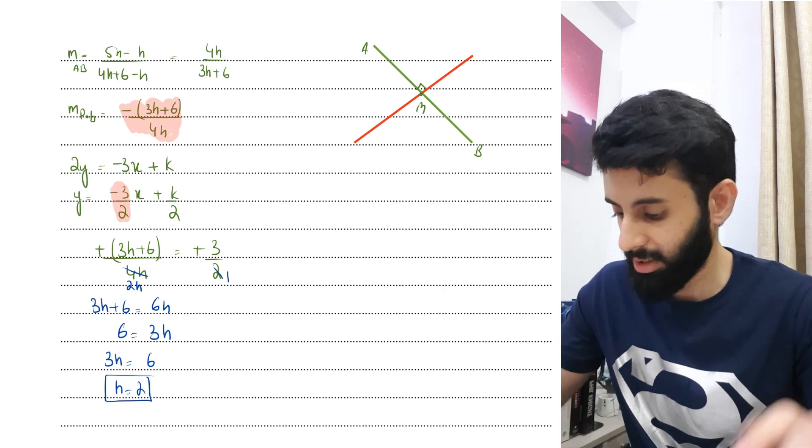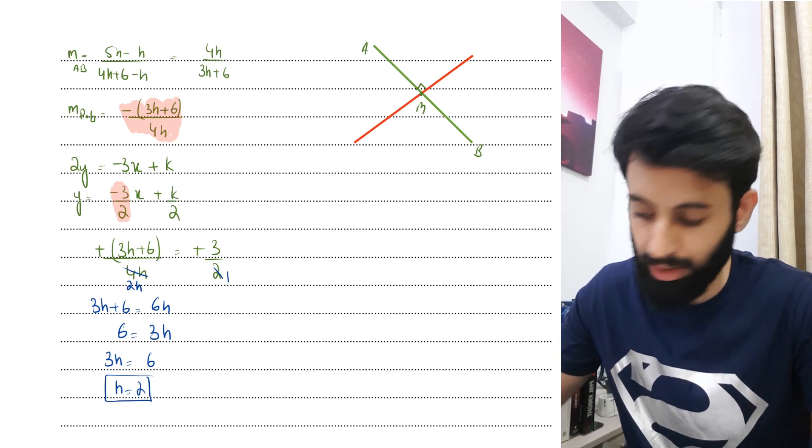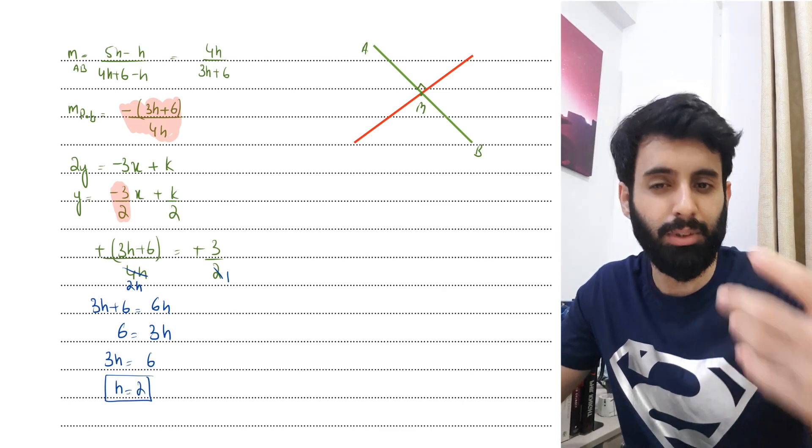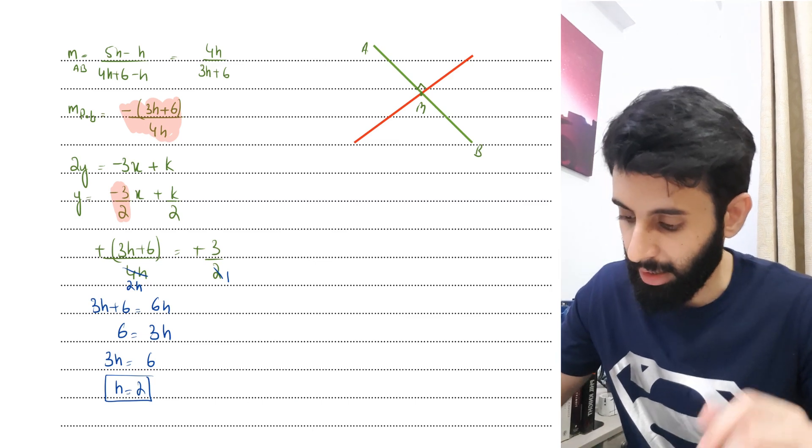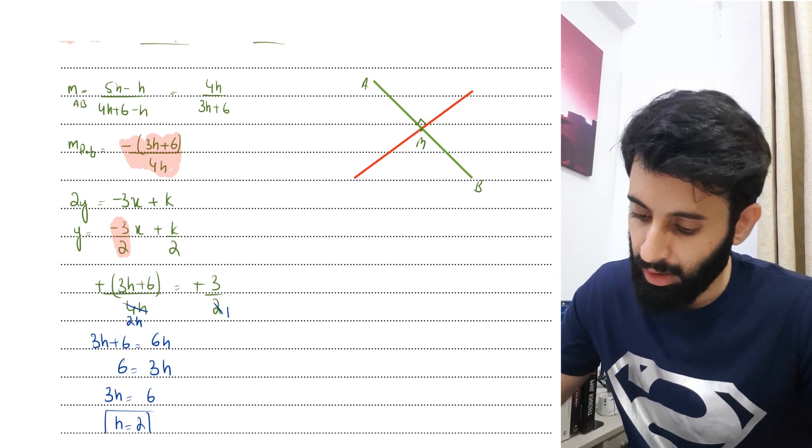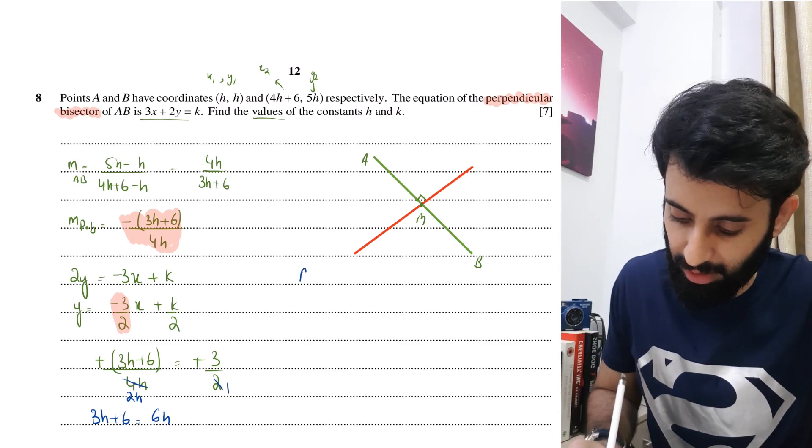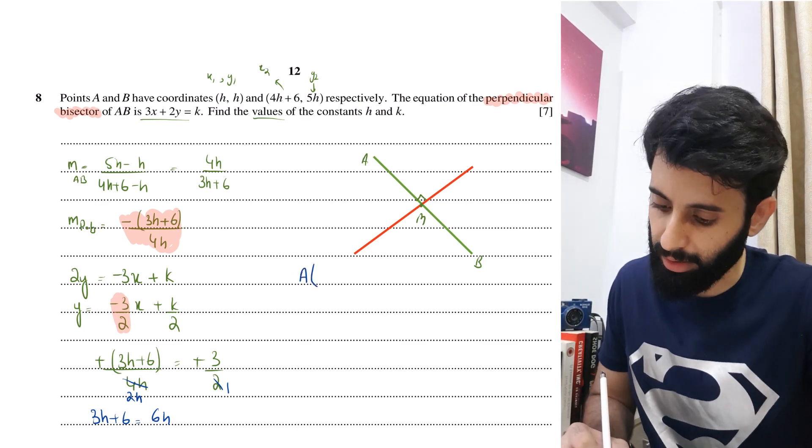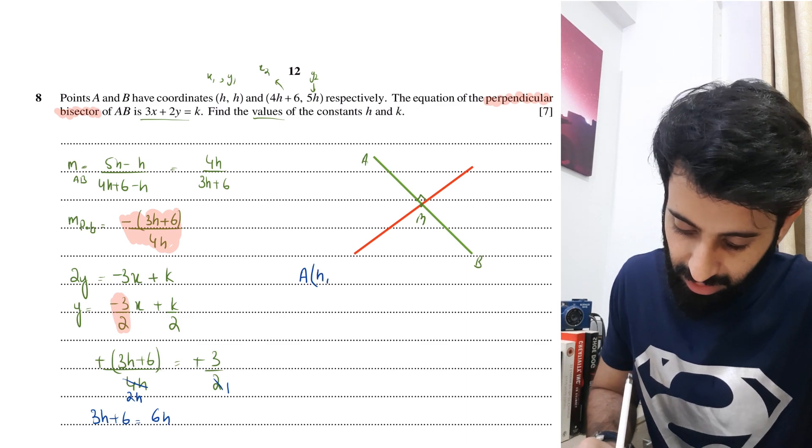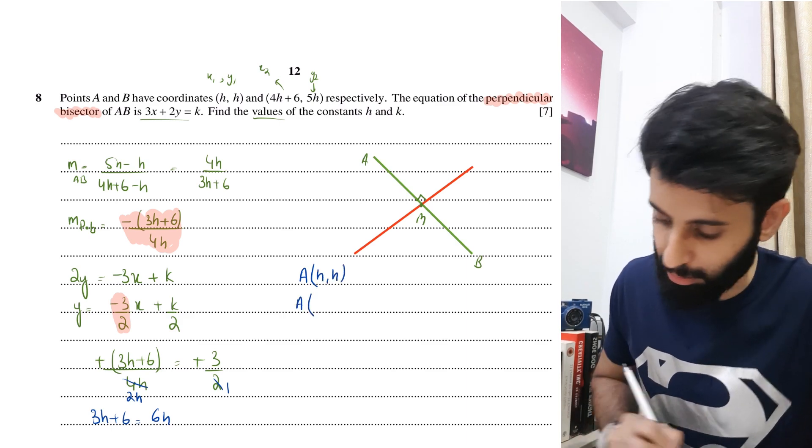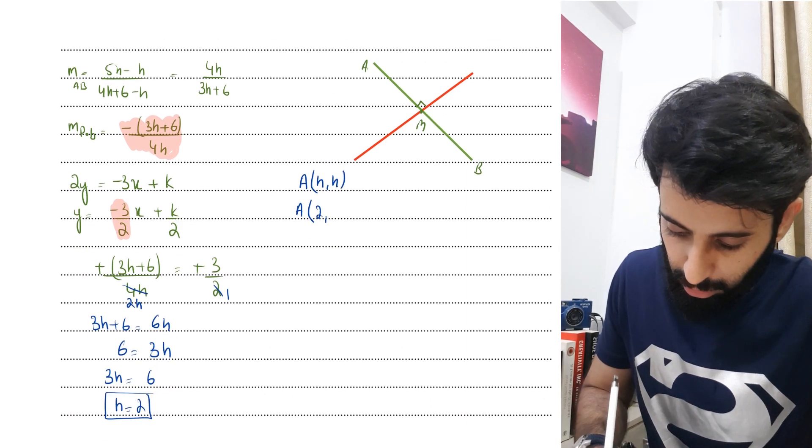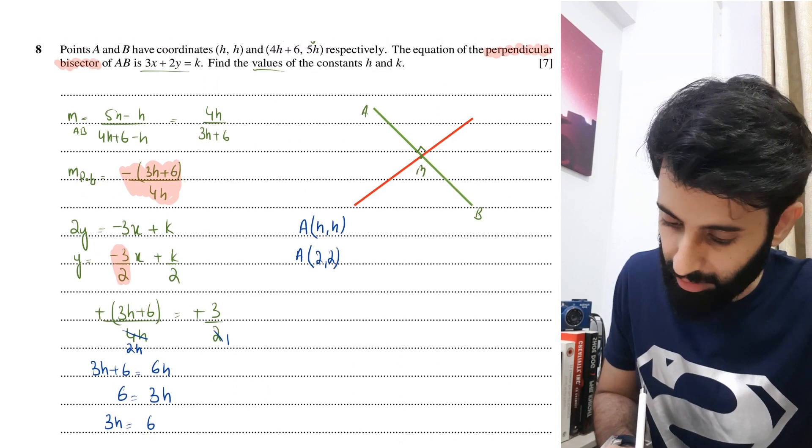Now, remember, we just have the value of h. We still have to find out the value of k. Now, how is this going to help us? Let's see. Considering that I have h, that means I basically know what A and B looked like. I know that A, which was previously (h, h), is now basically (2, 2).